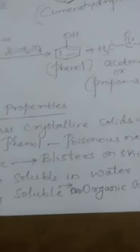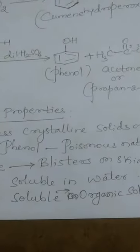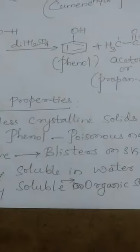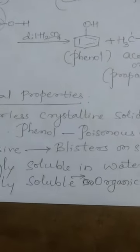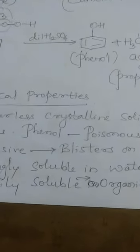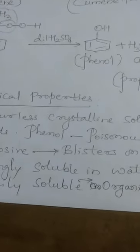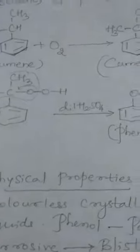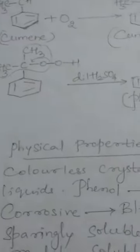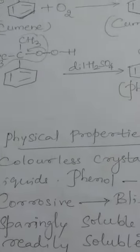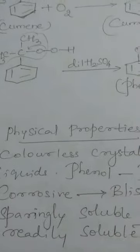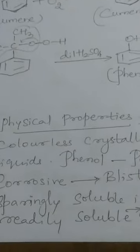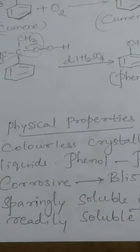So till now we have discussed the definition of phenols, classification of phenols, and different methods of preparation of phenols — that is from haloarenes, from benzene sulfonic acid, from diazonium salts, and the cumene process, which is very very important. Then in brief, we have discussed the physical properties of phenols. In the next class, we shall continue with chemical properties of phenols. Thank you.